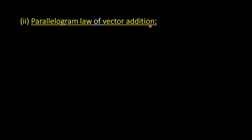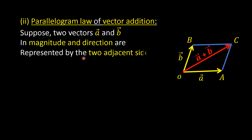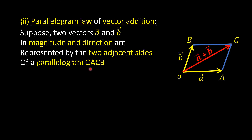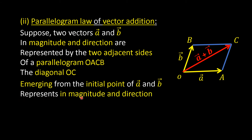The parallelogram law of vector addition states: suppose two vectors A-bar and B-bar in magnitude and direction are represented by the two adjacent sides of a parallelogram OACB. Then the diagonal OC emerging from the initial point O of A-bar and B-bar represents, in magnitude and direction, A-bar plus B-bar.